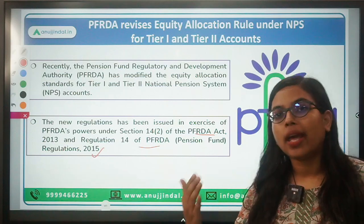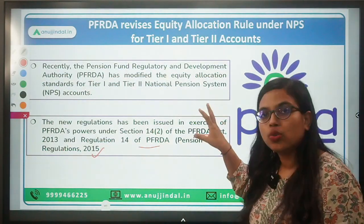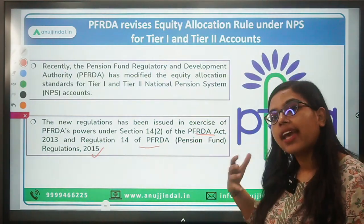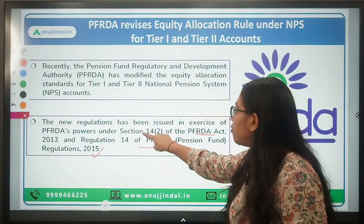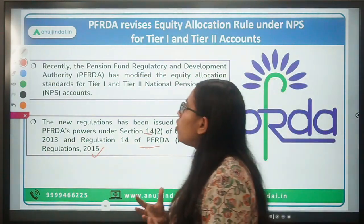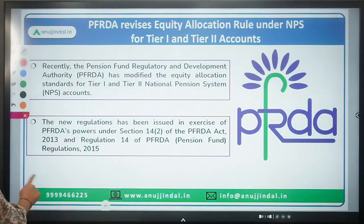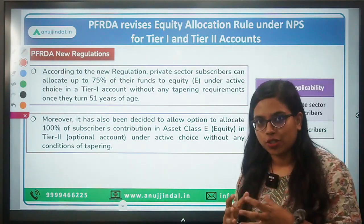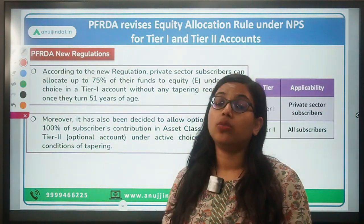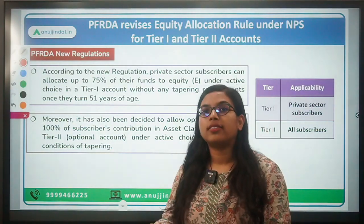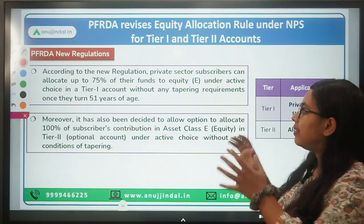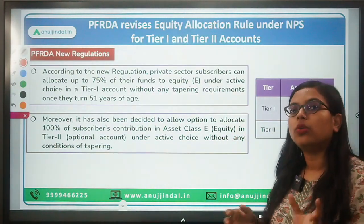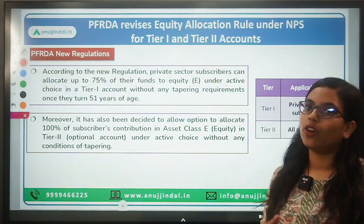These regulations keep on amending from time to time. Based on these two major Acts and Regulations, PFRDA has been exercising its powers under Section 14 of the PFRDA Act. Before jumping directly to the amendments, we need to first understand the composition — what Tier 1 and Tier 2 accounts are, and what active mode and auto mode mean.